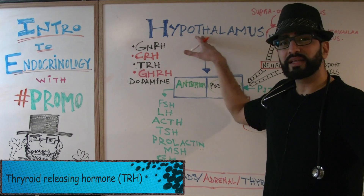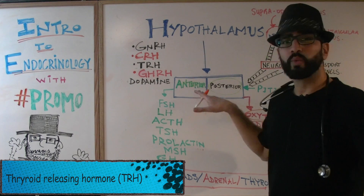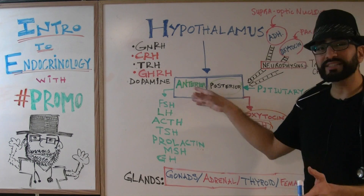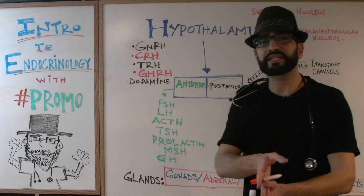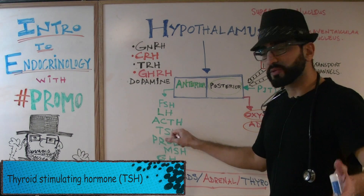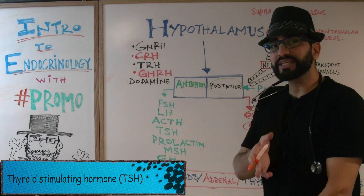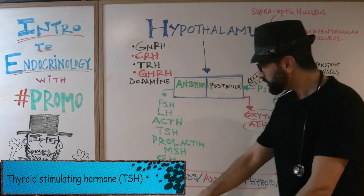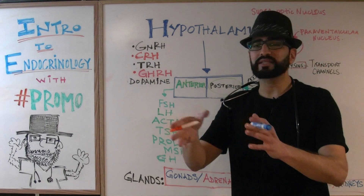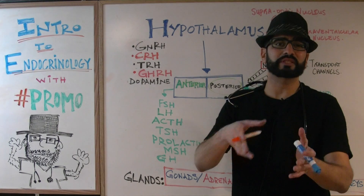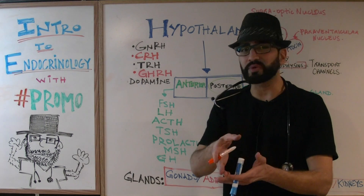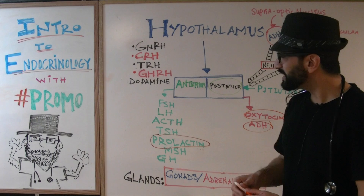The next one is TRH — thyroid releasing hormone. It leaves the hypothalamus, works on the anterior pituitary gland, and tells it to release TSH — thyroid stimulating hormone. Just like the name sounds, TSH is going to work on your thyroid gland and trigger the release of the thyroid hormones, T3 and T4.